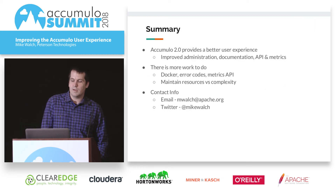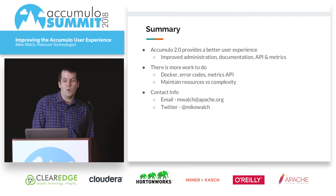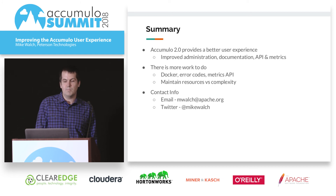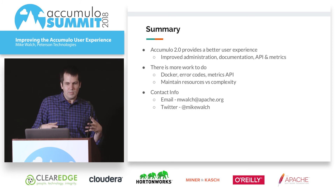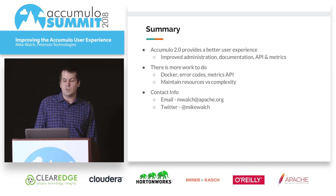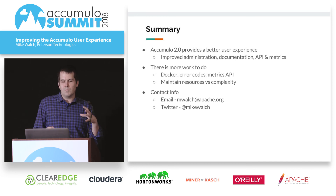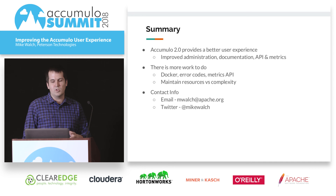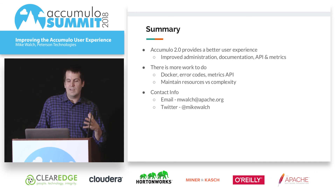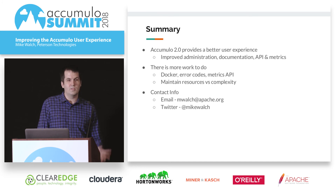In summary, Accumulo 2.0 hopefully provides a better user experience. We've improved a lot of common issues for users like administration, documentation, API, and metrics. But there's definitely a lot more work to do — Docker, error codes, metrics API. We also want to keep on refactoring and limiting the complexity of Accumulo so it maintains a healthy project. This is my contact info — any questions?